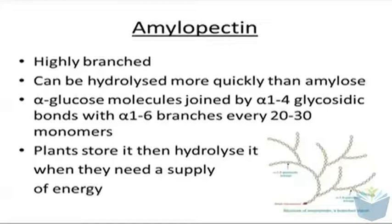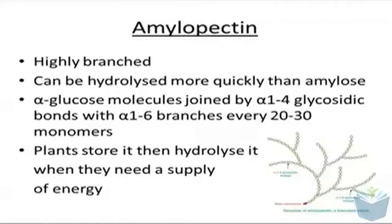Condensation is how you put together monosaccharides; hydrolysis is how you split them apart — and lysis actually means to split. The alpha glucose molecules are joined by 1,4 glycosidic bonds, and there are alpha 1,6 branches every 20 to 30 monomers. The fact that it is more branched means you can quickly break it down, so you can get the glucose quickly for the plant to respire.